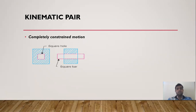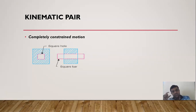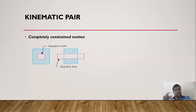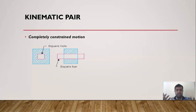Another topic is the kinematic pair. A kinematic pair means when two links are joined to each other, in contact with each other, and slide relative to each other — that is called a kinematic pair. A link is a member of a mechanism; it can be a single link or a combination of links. In a kinematic pair, two links are joined to each other and converted into a pair.